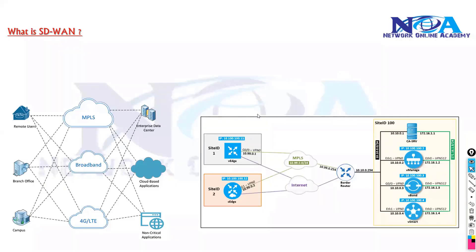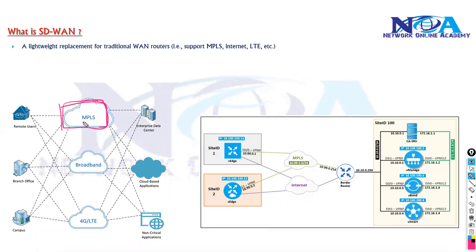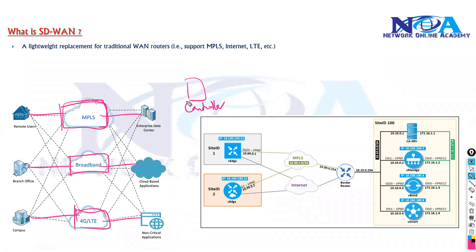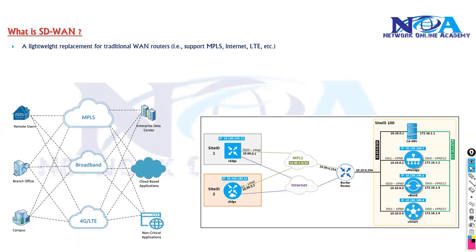To summarize, SD-WAN is a lightweight replacement for traditional WAN. This doesn't mean it replaces MPLS — MPLS networks are still there, we still use MPLS, broadband, and 4G to connect sites. The only difference is we manage devices from a centralized controller. MPLS still provides connectivity through the service provider, but we add software-defined automation on top of that.